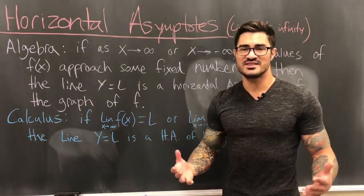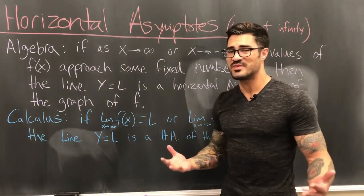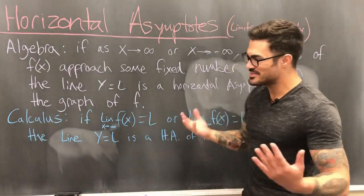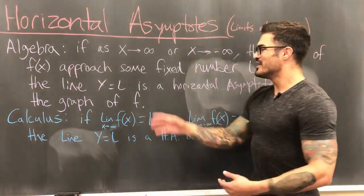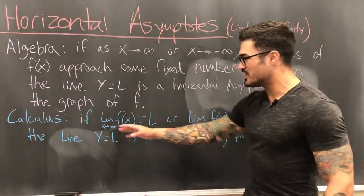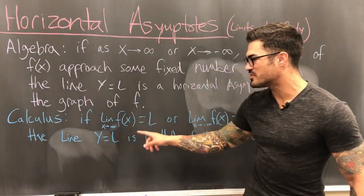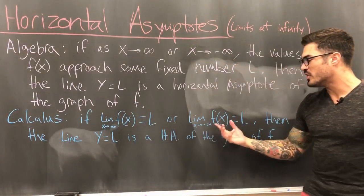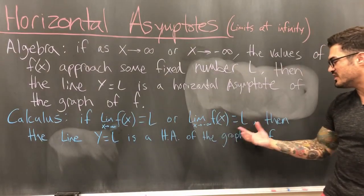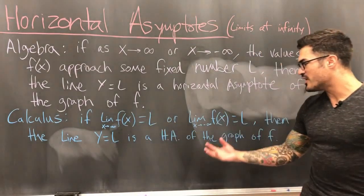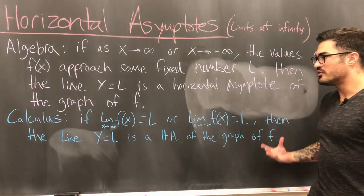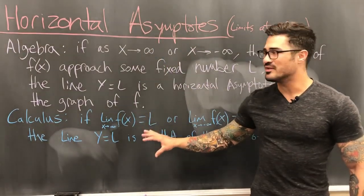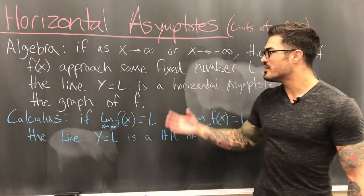So if you understood horizontal asymptotes and end behavior in algebra, you already understand basic limits — isn't that cool? In calculus notation: if the limit of f(x) as x → ∞ equals L, or the limit as x → −∞ equals L, then the line y = L is a horizontal asymptote. These two definitions are exactly the same, just written slightly differently.